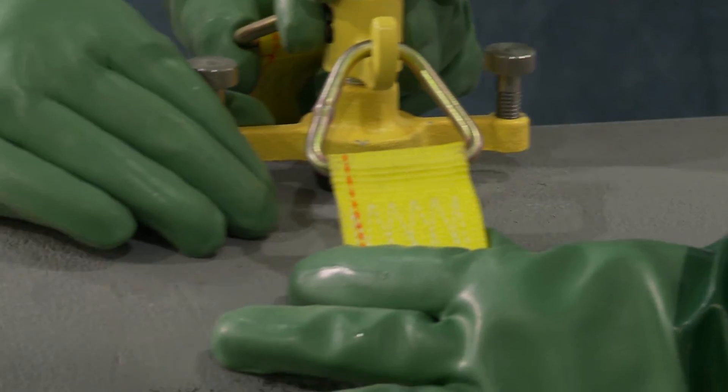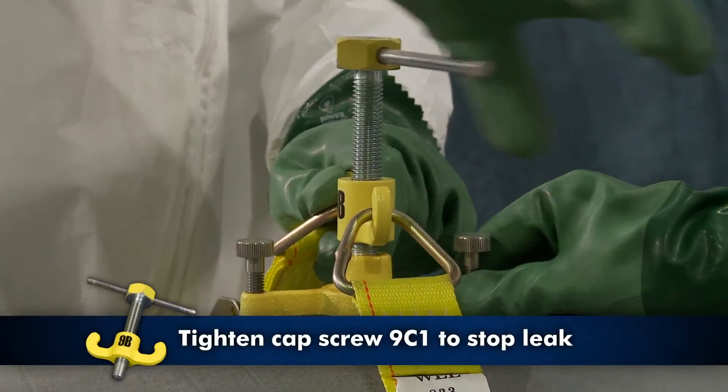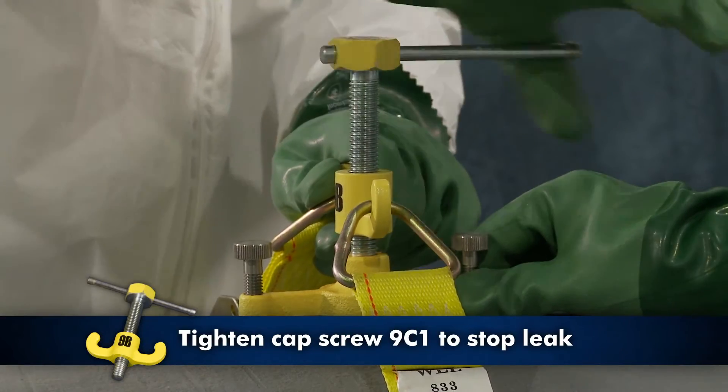Slide the patch over the leak. Tighten the cap screw 9C1 by hand until the leak stops.